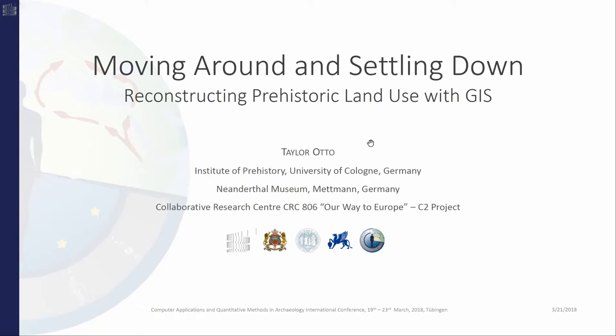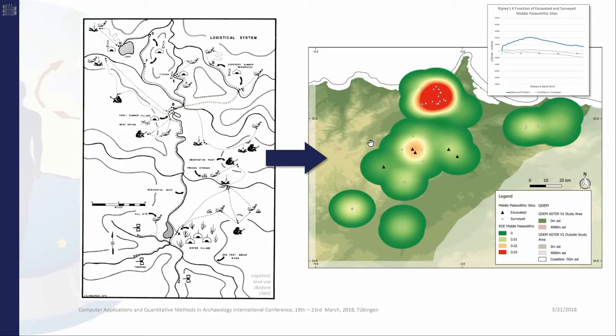Land use is the conceptual tool that we use when we want to combine data from multiple sites into original analysis. We usually do this by reconstructing mobility, settlement pattern, procurement pattern, and other elements that we combine into the common term land use.